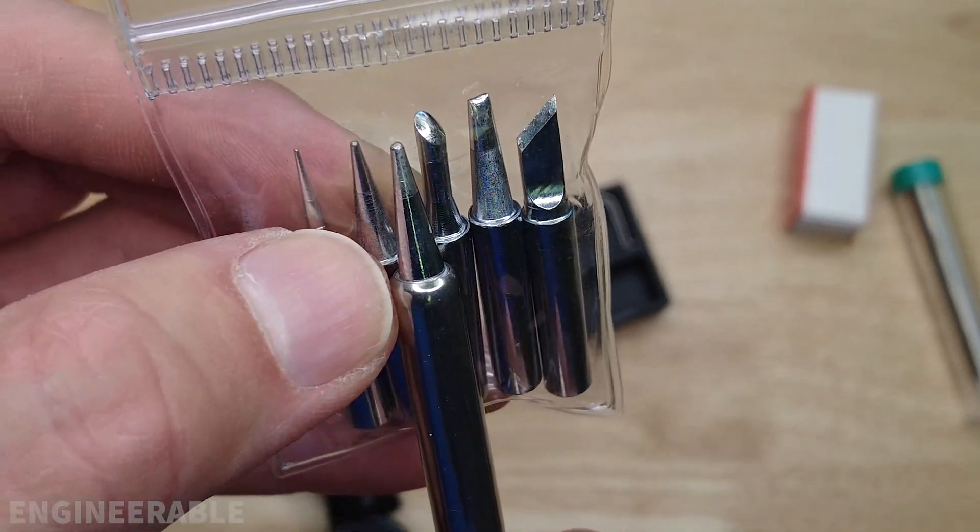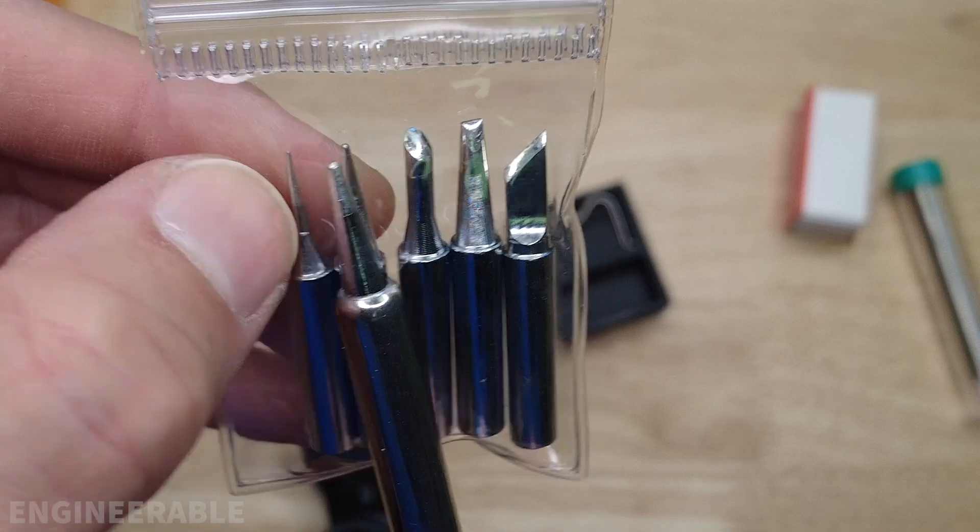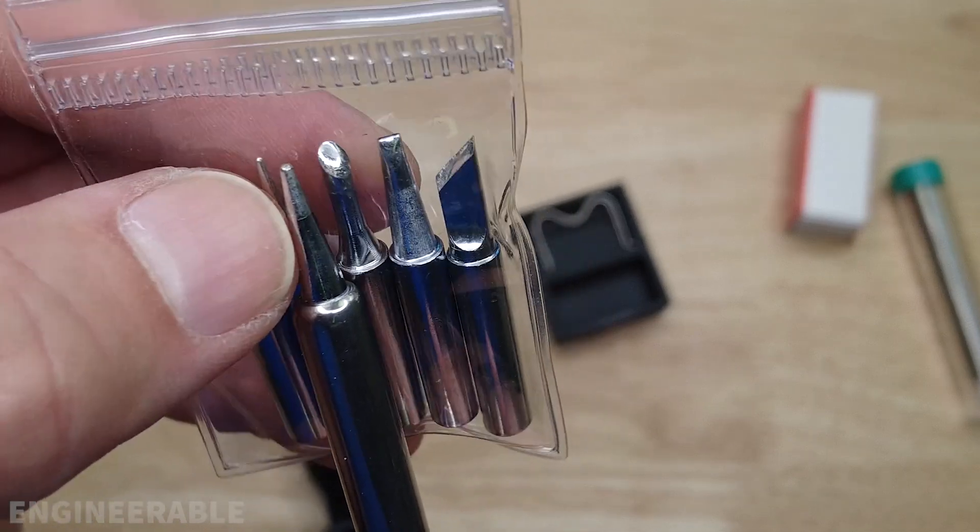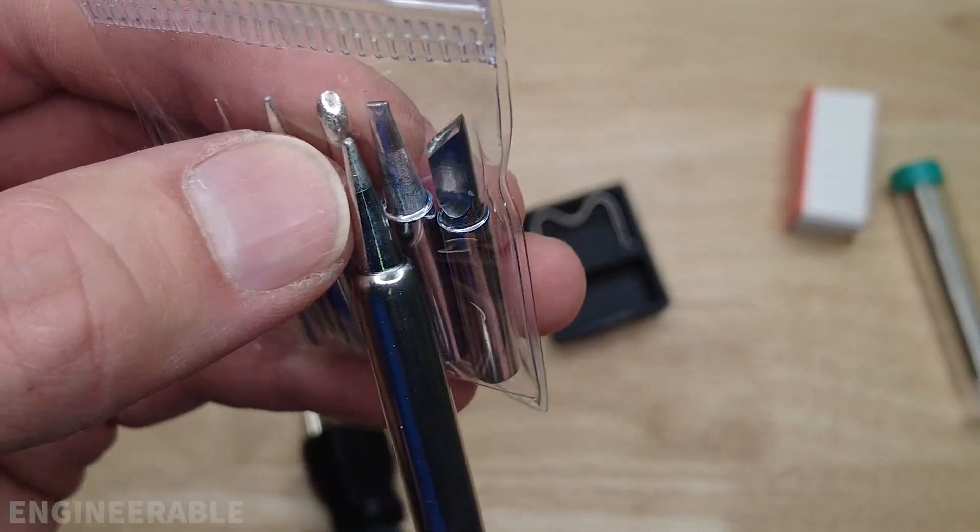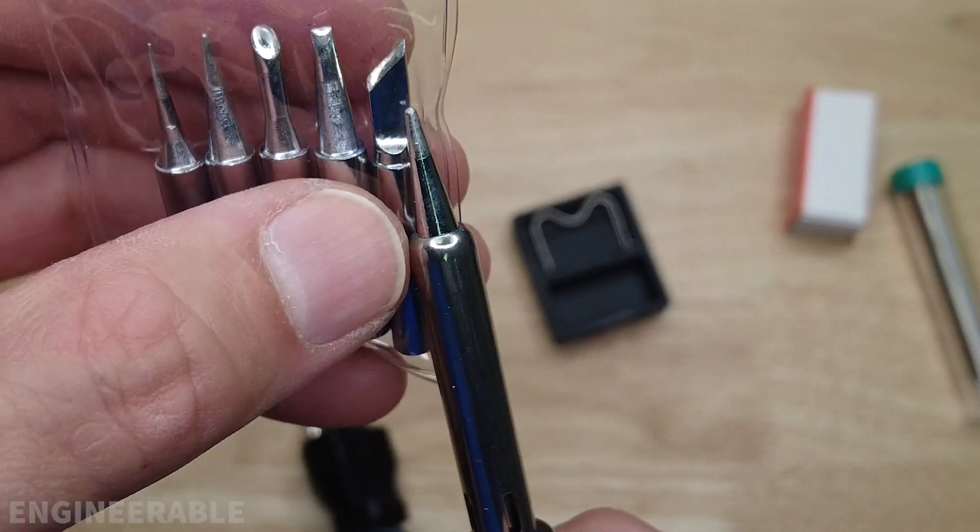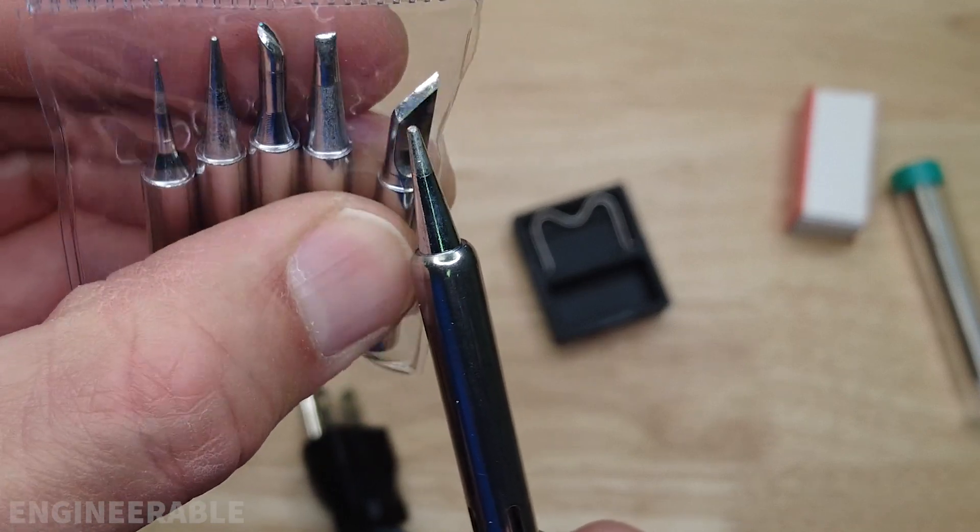Looks like this one may be very similar but a little bit thinner, so you get a super thin one, medium thin, a little bit thicker, then these like bevel, flat tip, and something that looks more like a knife.